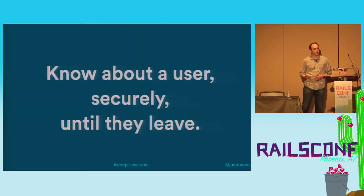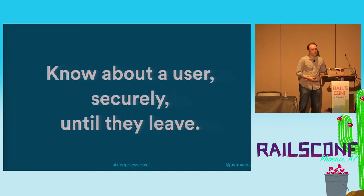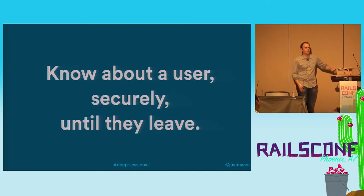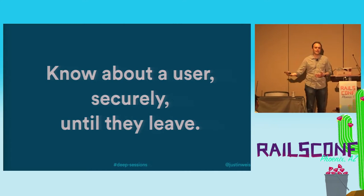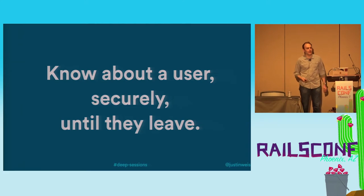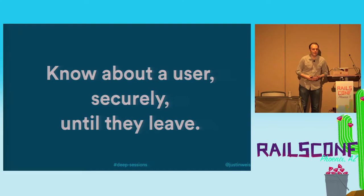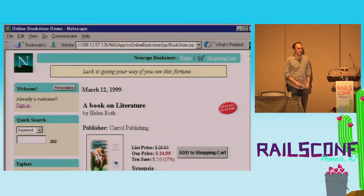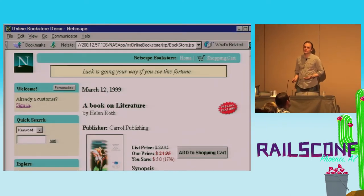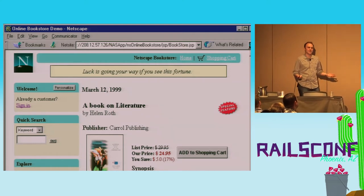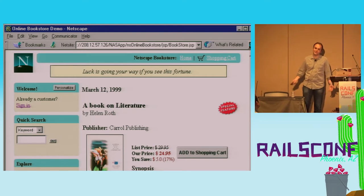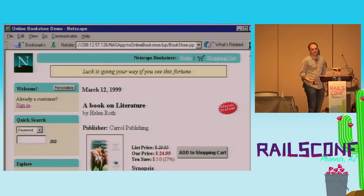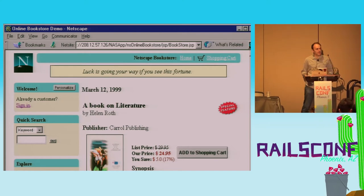The nice thing is, to understand sessions, we really don't need to get too complicated. We want to know about a user securely, so that nothing can mess with that data, and we want to know about it until they leave. All we need is some way for your user's browser to coordinate with your Rails app. People realized this was a thing pretty early on, and as more people wanted to buy things on the web, developers needed a way to keep track of things like shopping carts and user preferences.